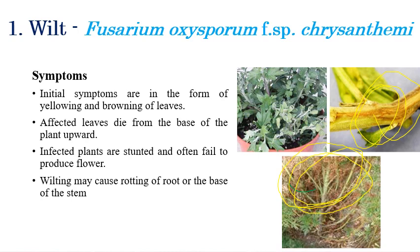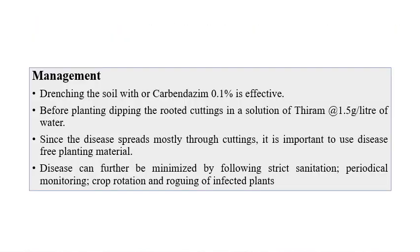Wilting may cause rotting of roots or complete death of the plant, especially in the last stage. For management, application of carbendazim by soil trenching is reported to be very effective. Soil trenching with carbendazim at 0.1% seems to be effective, though commercial soil trenching requires approximately 40,000 liters of water, making it difficult in practice.